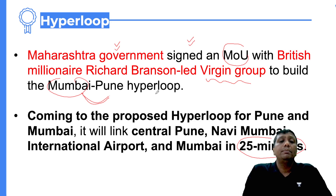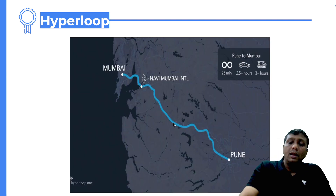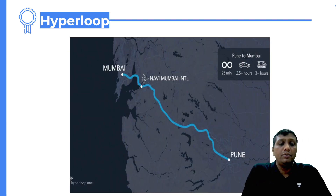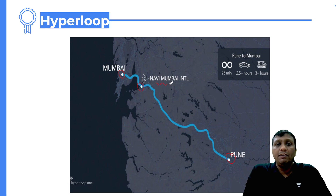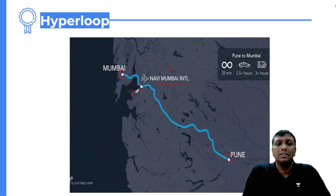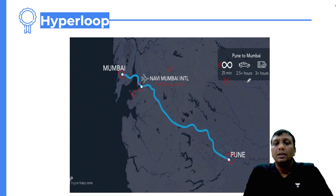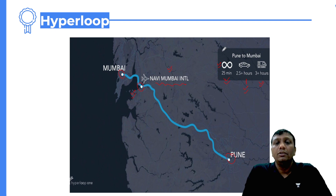How is a 25-minute journey possible? It is based on speed and coming projects. In this entire journey, there will be three stoppages: the starting point, the endpoint, and one in between, which is the Navi Mumbai International Airport. The normal car journey takes two and a half hours, and by general train it takes around three and a half hours. The hyperloop train massively reduces the duration.